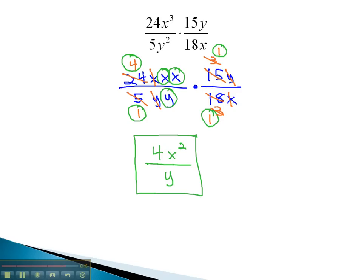Multiplication: we reduce first and multiply second. If there's variables, we'll write out each exponent as a product so that we can reduce the variables just like the numbers, by dividing out common factors.